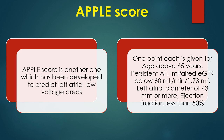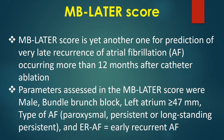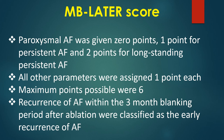APPLE score predicts left atrial low voltage areas. One point each is given for: age above 65 years, persistent AF, eGFR below 60 ml/min/1.73 m² body surface area, left atrial diameter of 43 mm or more, and ejection fraction less than 50%. MB-LATER score predicts very late recurrence of atrial fibrillation occurring more than 12 months after catheter ablation. Parameters assessed are: male sex, bundle branch block, left atrium 47 mm or more, type of AF (paroxysmal 0 points, persistent 1 point, long-standing persistent 2 points), and early recurrent atrial fibrillation. All other parameters are assigned 1 point each, with a maximum of 6 points. Recurrences within the 3-month blanking period after ablation are classified as early recurrence of AF.